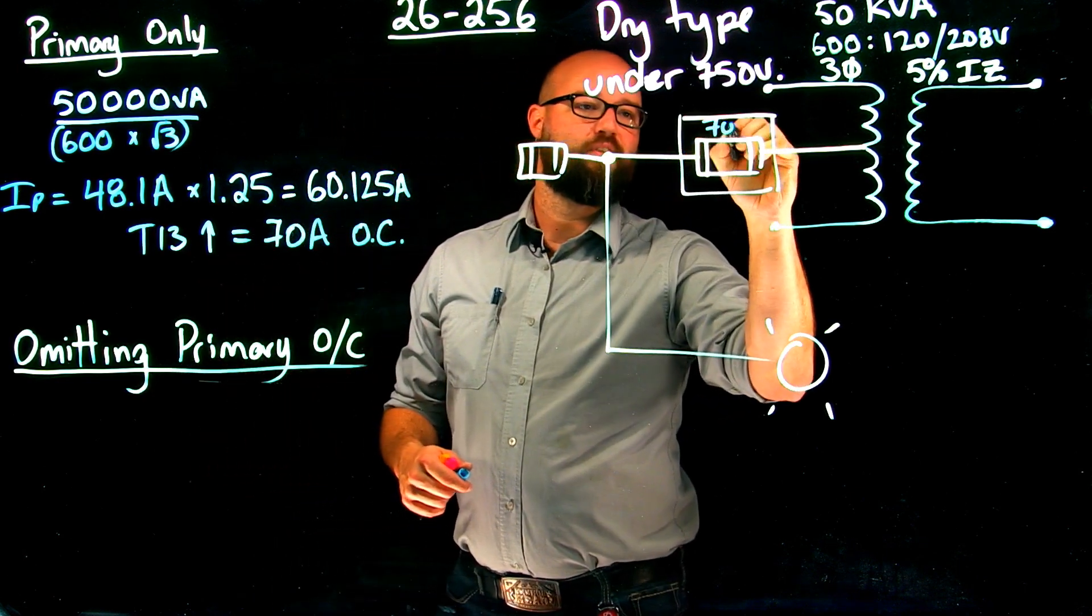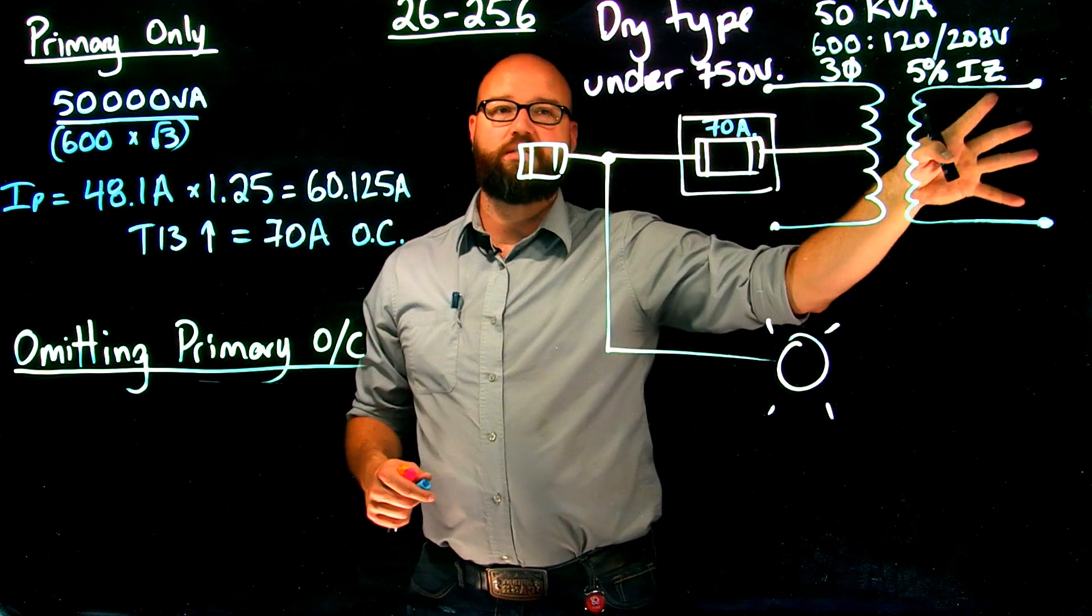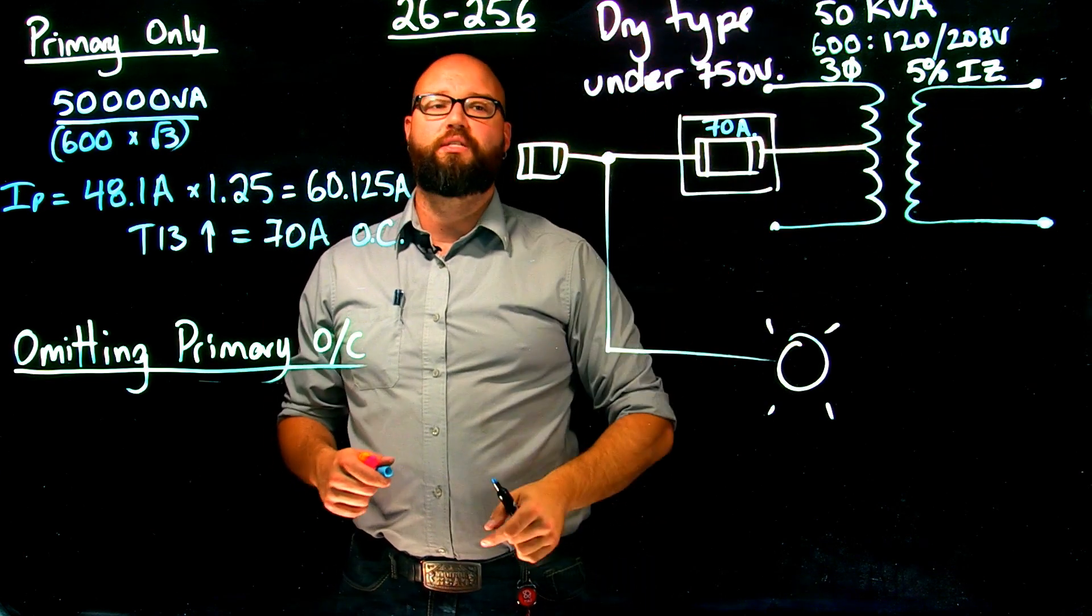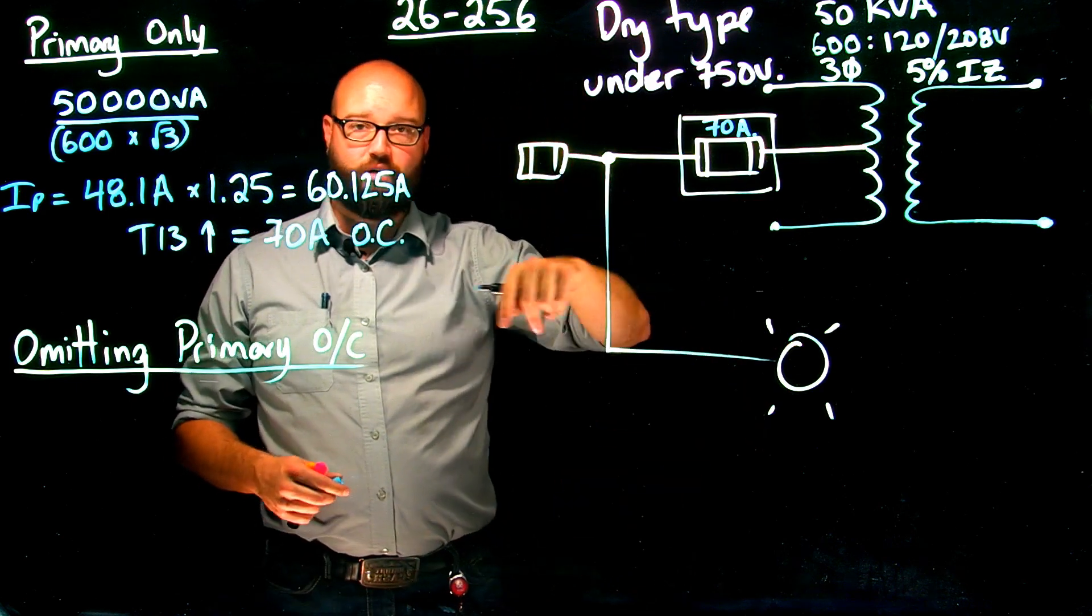and we are going to choose a 70 amp overcurrent. So this would become a 70 amp overcurrent. That would adequately protect our secondary side, it would adequately protect our primary side. Again, primary feeder, we're not going to worry about right now. That's the next thing we're going to do.